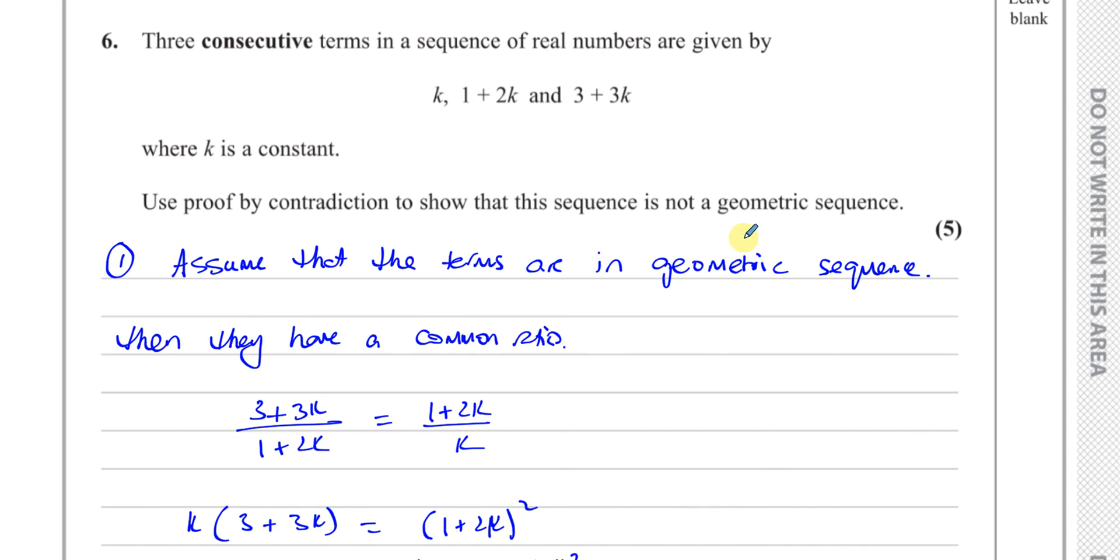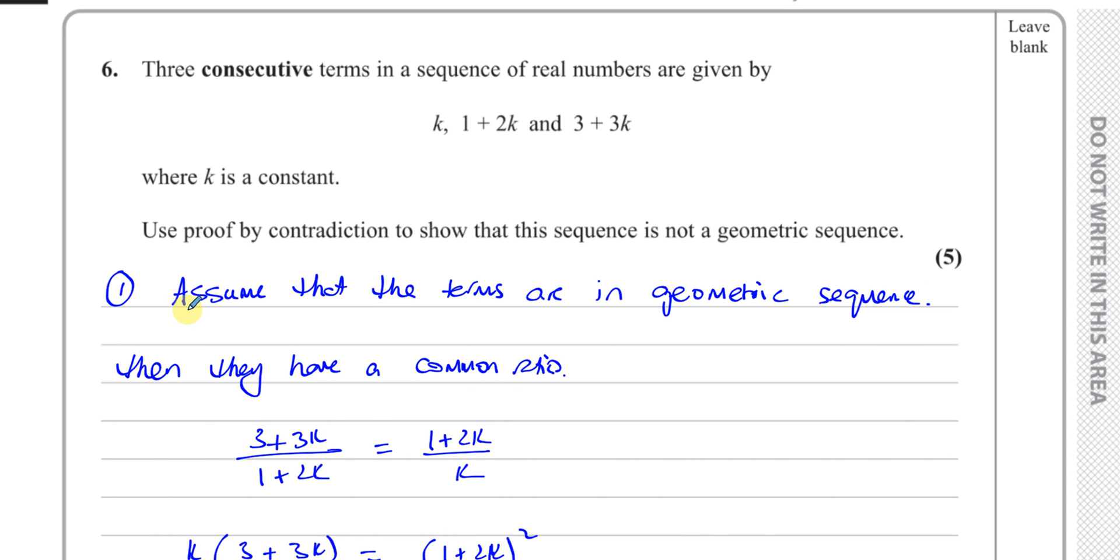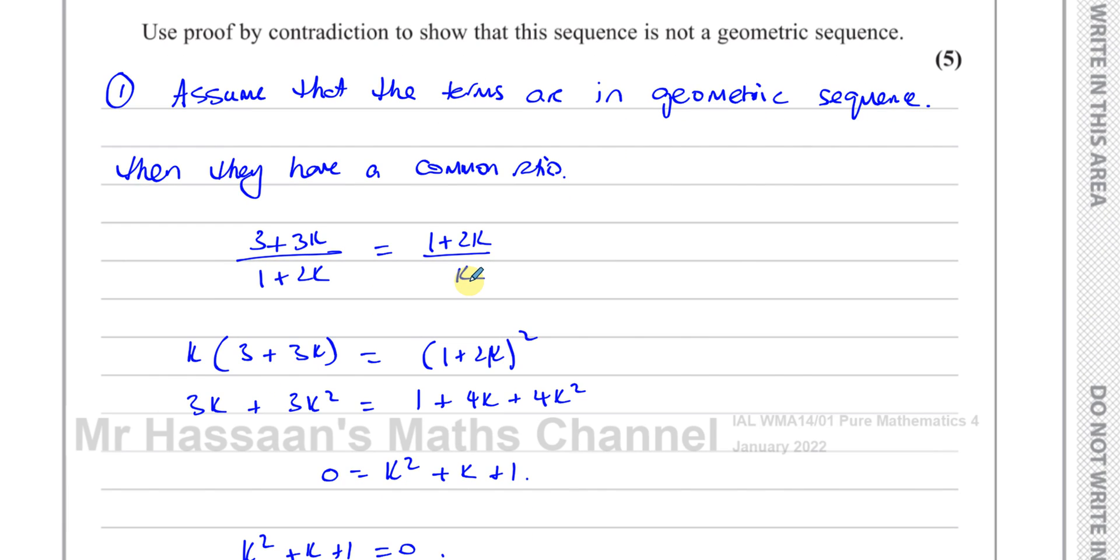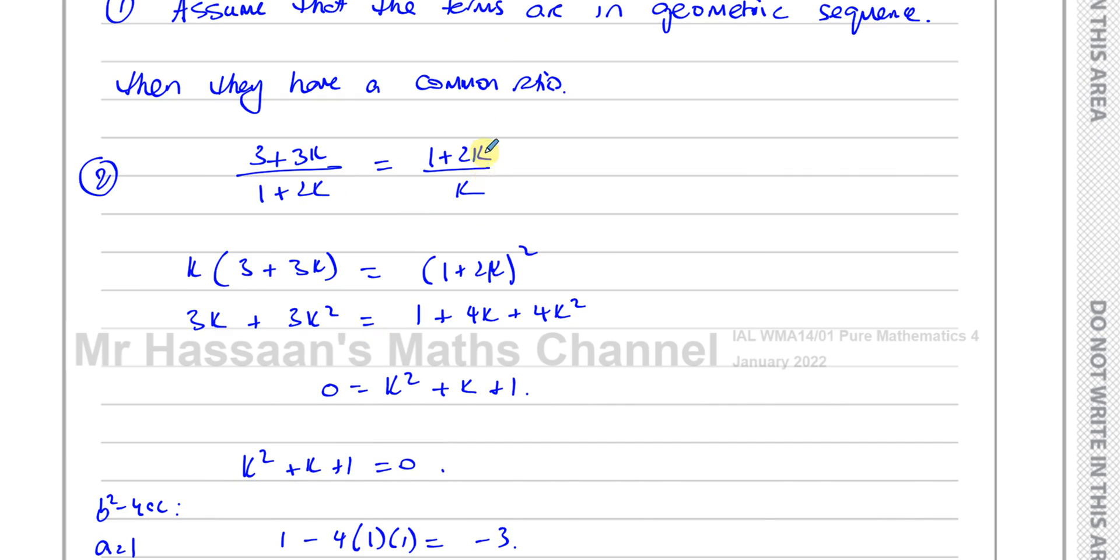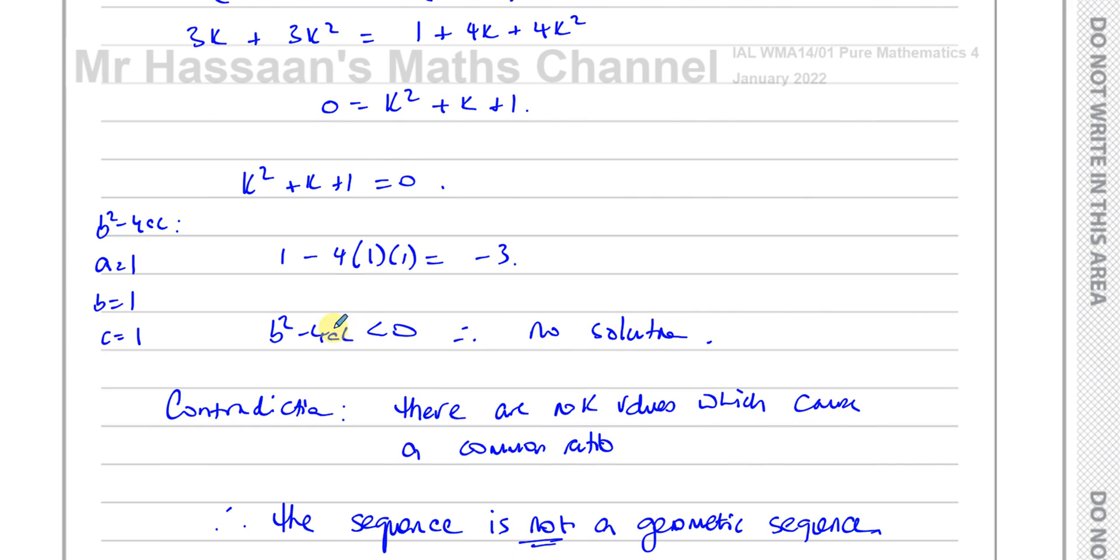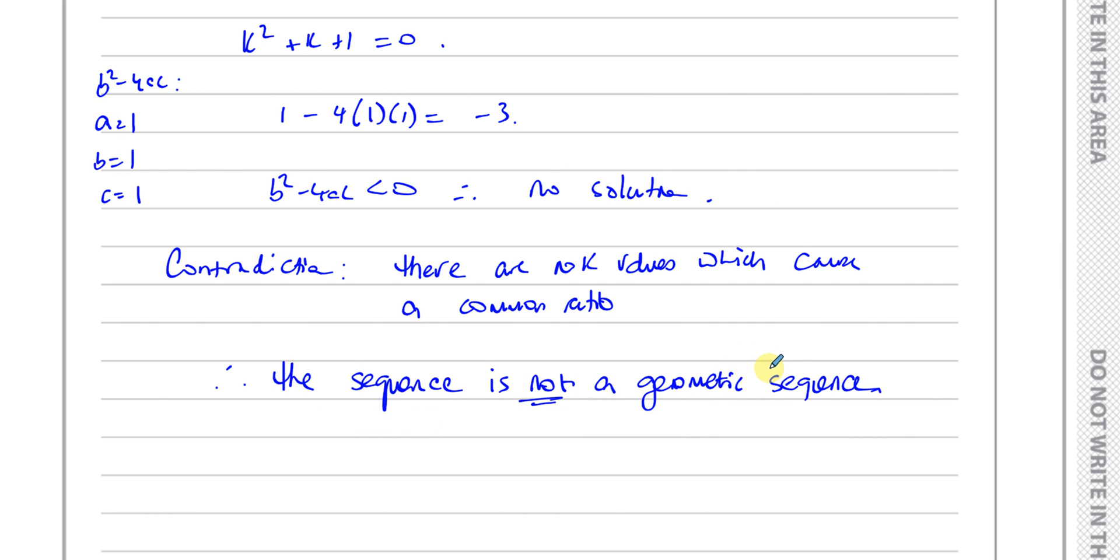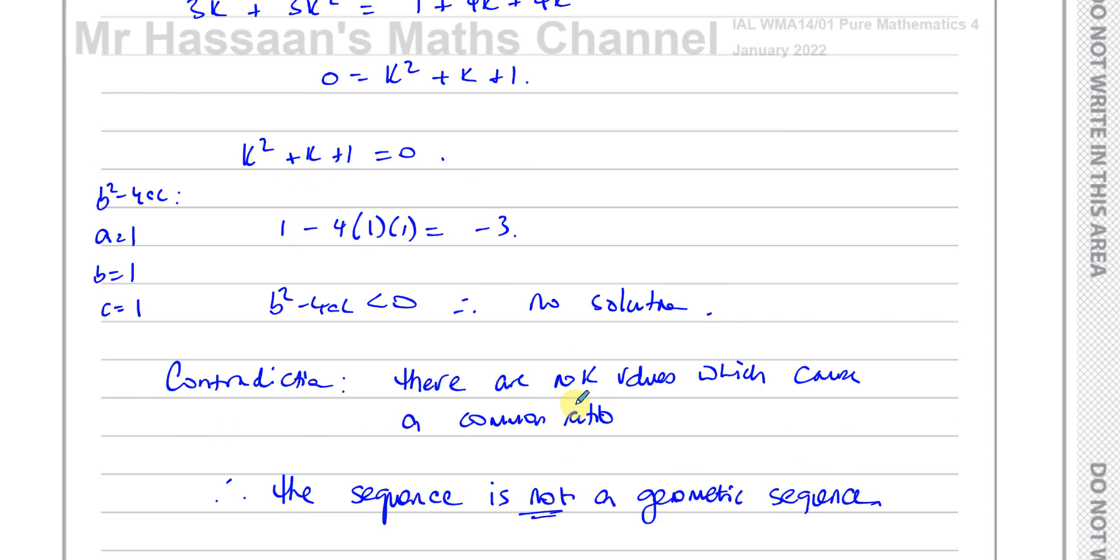Use proof by contradiction to show this is not a geometric sequence. First, you assume the opposite. You assume that it is in geometric sequence. Then you use what that implies, that there's a common ratio. And you find that trying to solve the equation formed when you have assumed that there is a common ratio leads to no solution. That means they don't have a common ratio. That means they're not in geometric sequence. So that's how we can prove by contradiction. I hope that is clear.